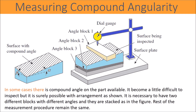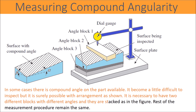In some cases, there is a compound angle on the part. It becomes a little difficult to inspect, but it is surely possible with the arrangement as shown. It is necessary to have two different blocks with different angles stacked as in the figure. The rest of the measurement procedure remains the same.